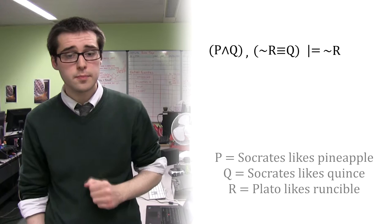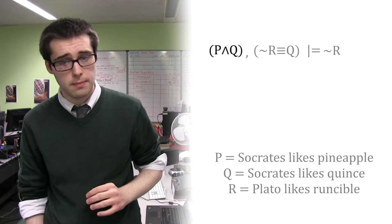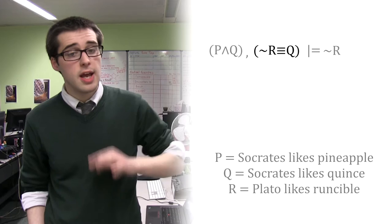This reads: premise, Socrates likes pineapple and Socrates likes quince. Comma, premise, it is not the case that Plato likes runcible if and only if Socrates likes quince. Turnstile conclusion, it is not the case that Plato likes runcible.